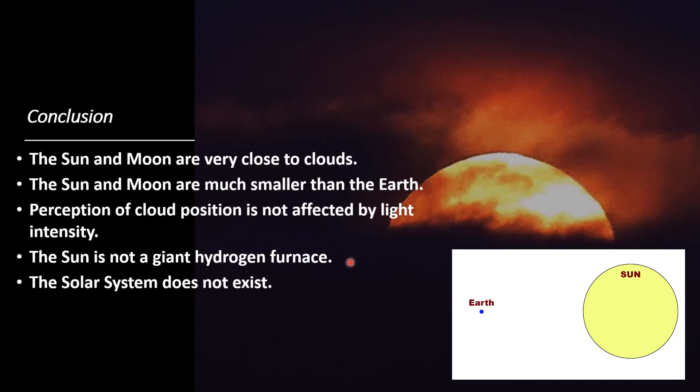So, due to those experiments, what do we have here? My conclusion is, the sun and moon are very close to the clouds. They would have to be. In order for the clouds to engulf the sun and moon, they would have to be close. They would have to be very local.